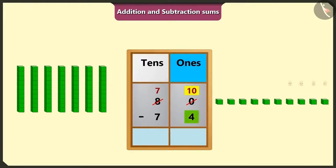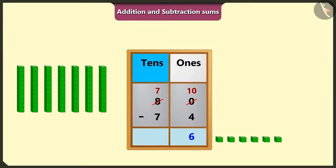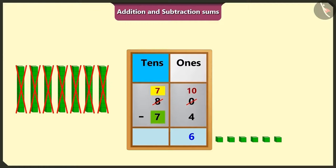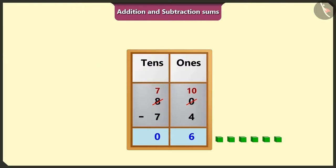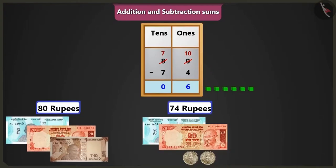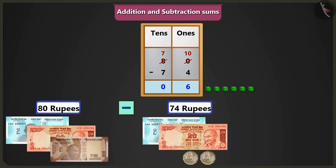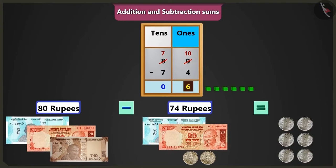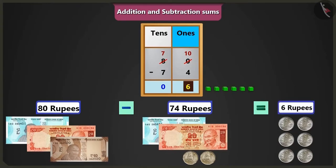Now, if we will subtract 4 ones from 10 ones, it will be 1, 2, 3, 4, 5 and 6 ones left. And if we will subtract 7 tens from 7 tens, it will be 0 left in the box of tens. Yes. So, in this way, if we will subtract 74 rupees from 80 rupees, it will be 6 ones means 6 rupees will be left.